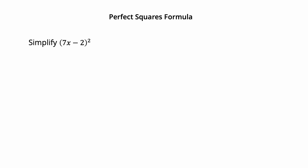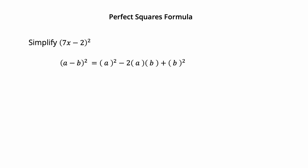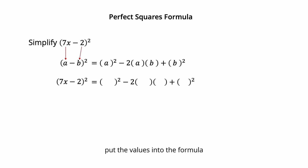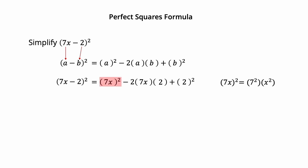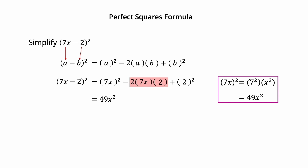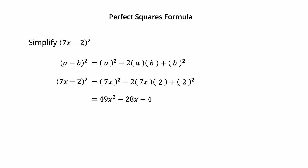Simplify the square of 7x minus 2 using the perfect square formula: (a minus b) squared equals a squared minus 2ab plus b squared. Here 7x is a and 2 is b. The square of 7x is 7 squared times x squared, which simplifies to 49x squared. 2 times 7x times 2 equals 28x, so the middle term is minus 28x. 2 squared equals 4. The square of 7x minus 2 is 49x squared minus 28x plus 4.